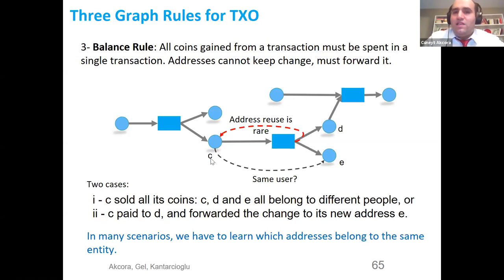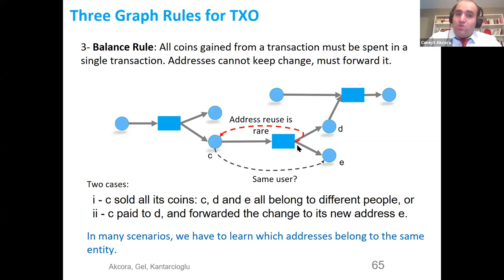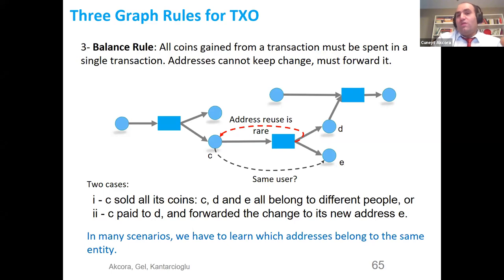In this figure, you see C, D, and E nodes. We cannot know if C is selling Bitcoins to both D and E, or just selling to E and keeping change in a new address. C could also list itself as the new output address — this is called the address limit. However, this happens rarely because the community practice is to create a new address whenever you need to keep change. For privacy purposes, we need to know if C and E belong to the same user, but this is not possible by protocol.